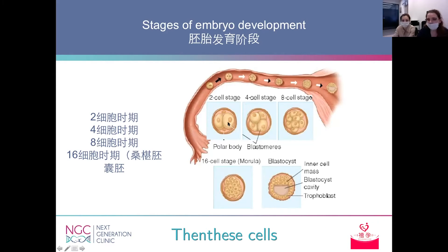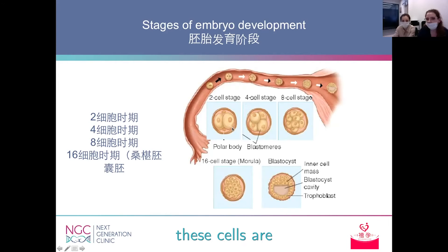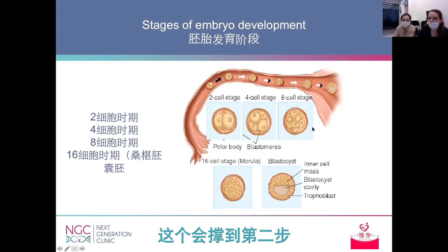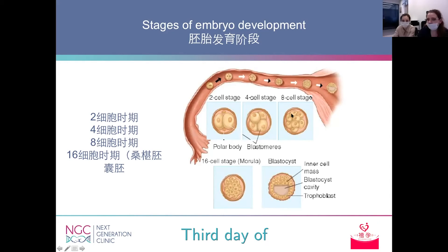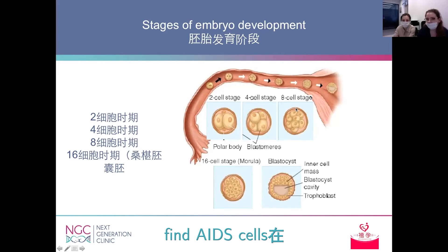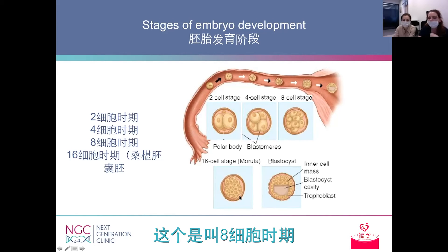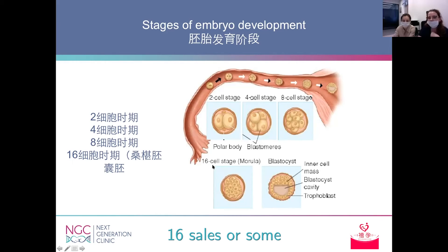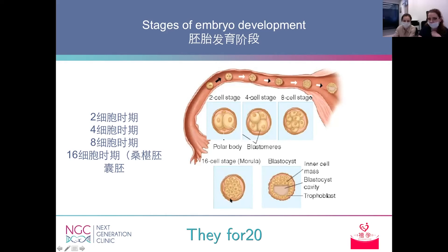Then these cells start to divide and we can find the four-cell stage. These cells are called blastomeres. The third day of development is the eight-cell stage, when we can find eight cells. The fourth day usually has about 16 cells or more, and the embryo is called a morula.